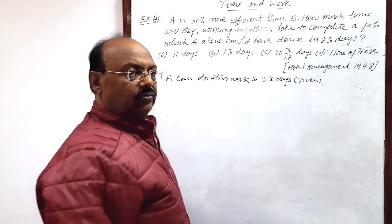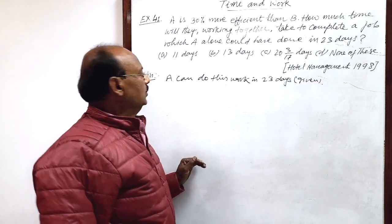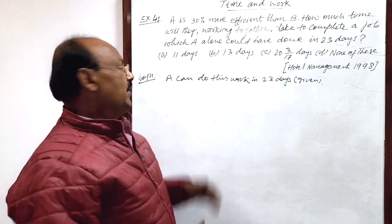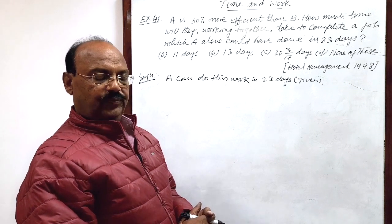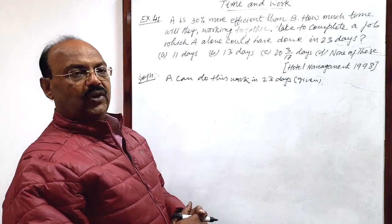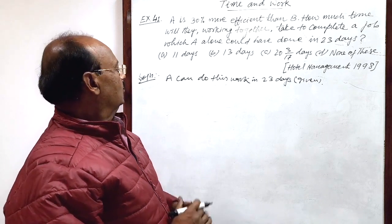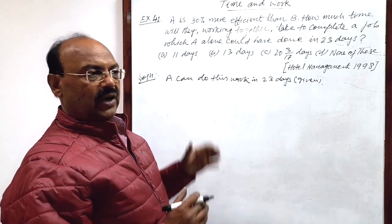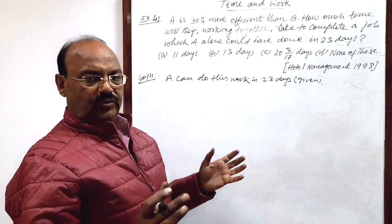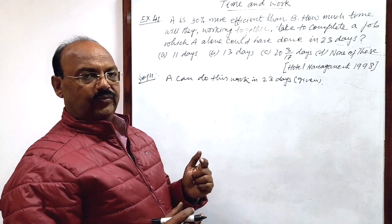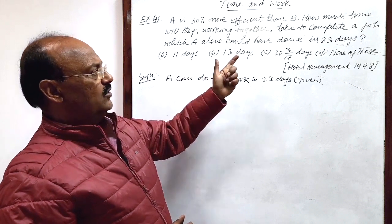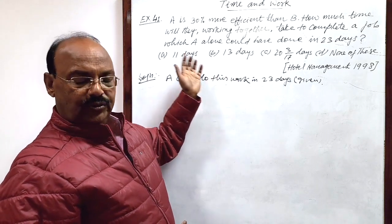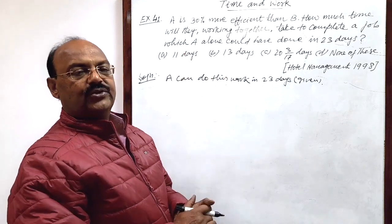Here first of all we will find out how many days will be required by B to complete the same work. First step. Then second step we will find what is the amount of work done by A plus B, means both working together in one day. Then third step, you can calculate the number of days required to complete the job if they are working together.